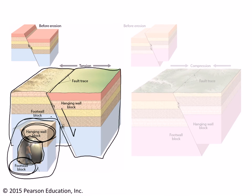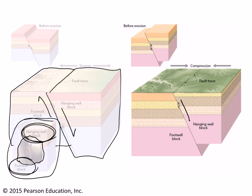If the hanging wall block has moved down relative to the foot wall block, that's called a normal fault. If the hanging wall block has moved up relative to the foot wall block, that is the opposite of normal — it's called reverse. That's basically where you have tectonic compression putting in the energy to shove that hanging wall block upward against the pull of gravity into an upward position relative to the foot wall block.